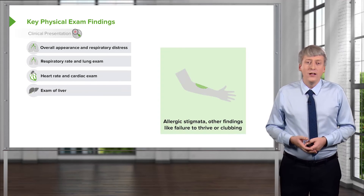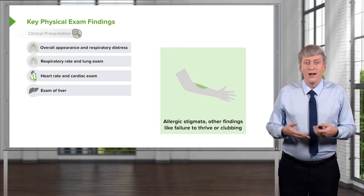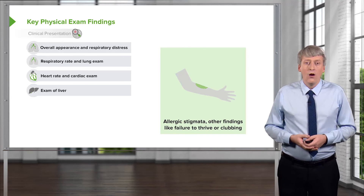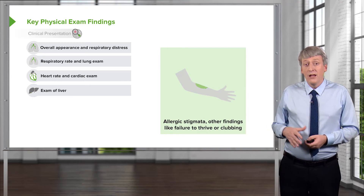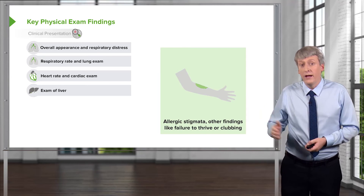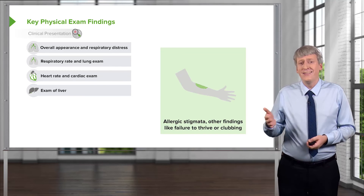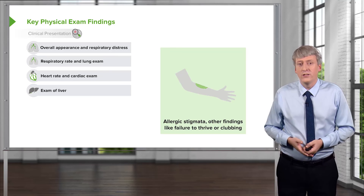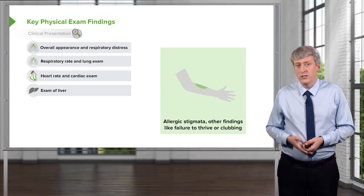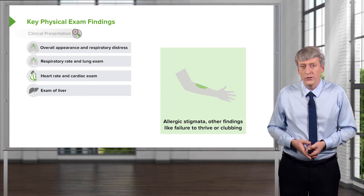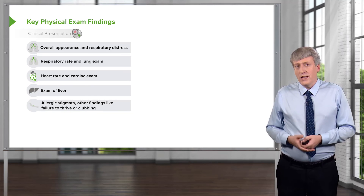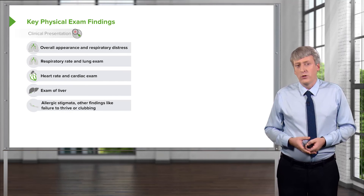It's helpful to find allergic stigmata — things like hives or eczema, or other findings in a patient with asthma. If you see clubbing or failure to thrive, that is not asthma. Something else is going on, and you need to figure out the cause of this pulmonary situation. So those are the key physical exam findings we're going to look for.